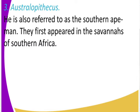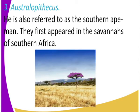Australopithecus is also referred to as the southern ape-man. It first appeared in the savannas of South Africa, which at that time was covered by savannah grassland. The Australopithecus was first discovered in the savannah grasslands of southern Africa. You can see in the image that the savannah grassland is covered by grass — that was the habitat of Australopithecus, where it lived its whole life.